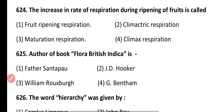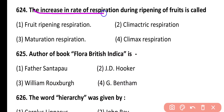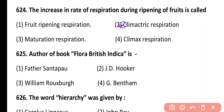Question 624. The increase in rate of respiration during ripening of fruits is called: fruit ripening respiration, climacteric respiration, maturation respiration, climax respiration. Correct answer is option 2. Climacteric respiration is the increase in rate of respiration during fruit ripening.